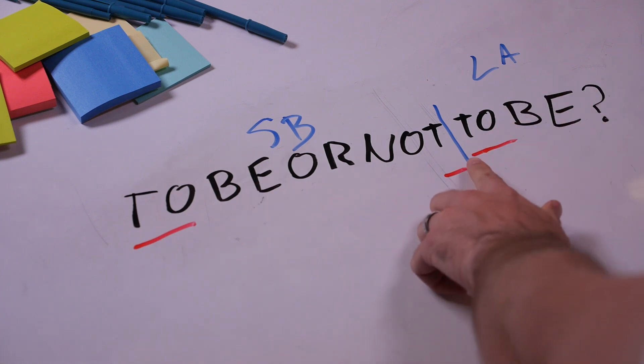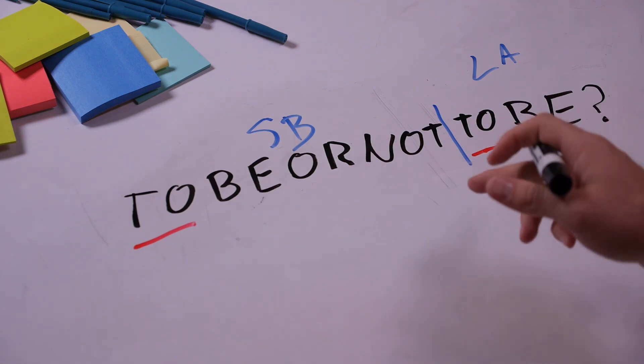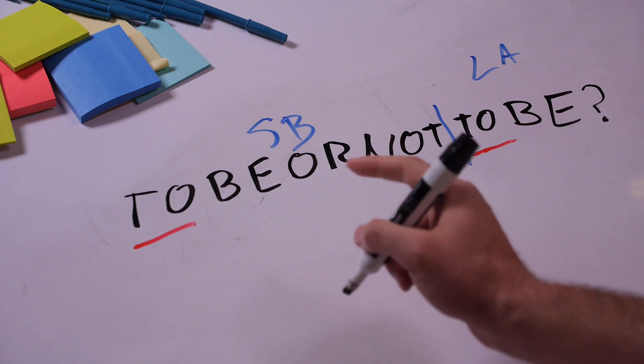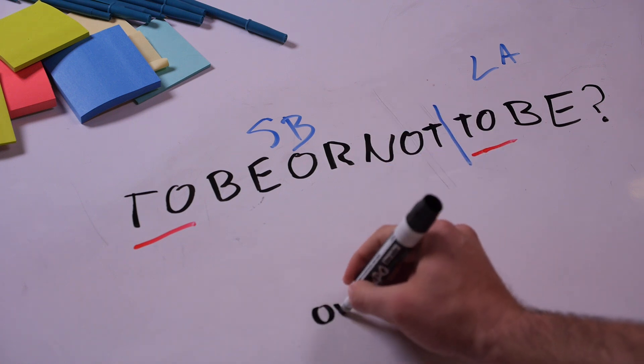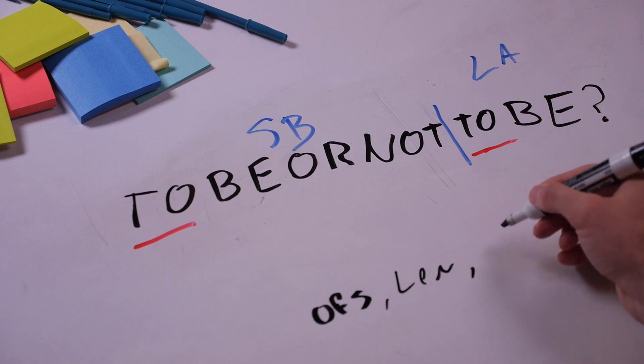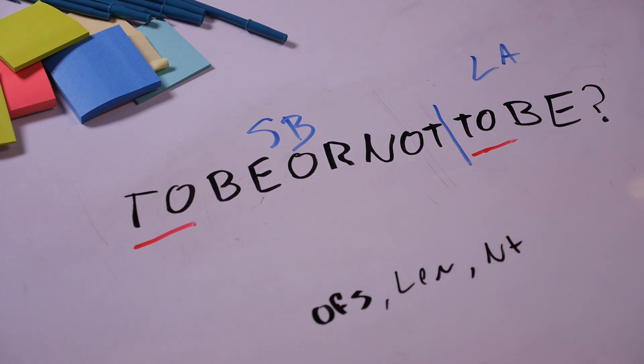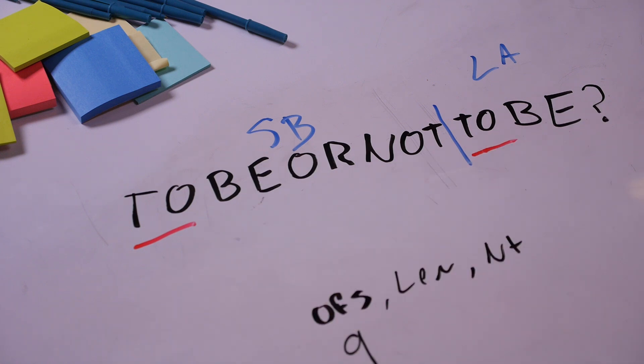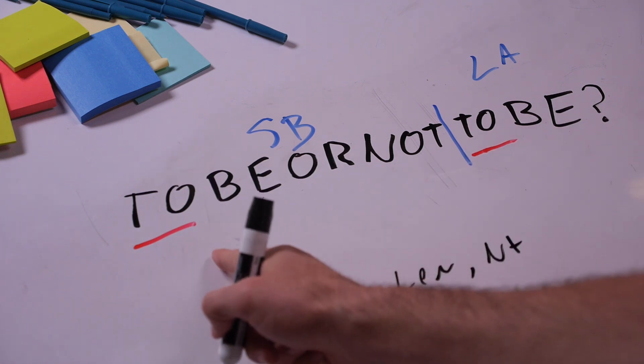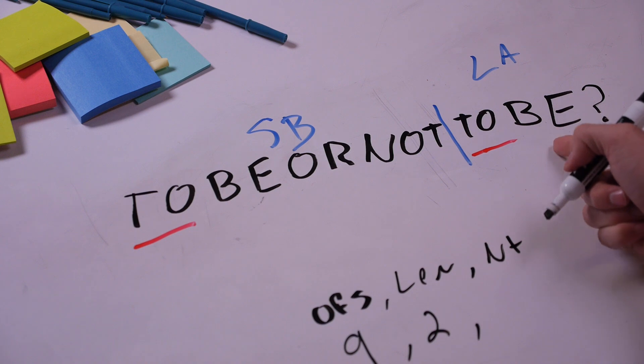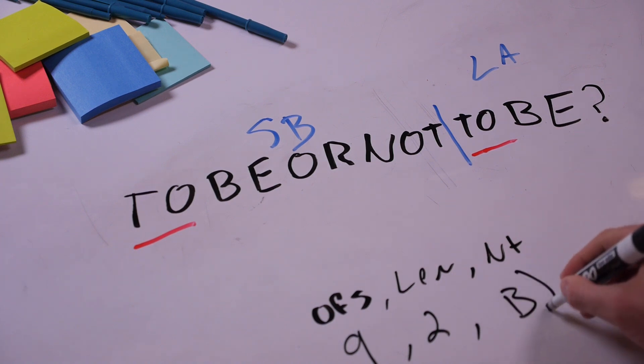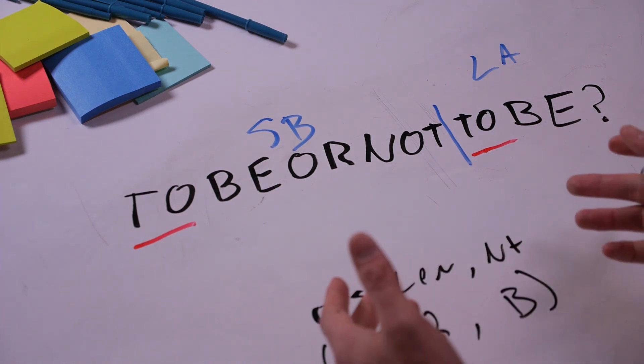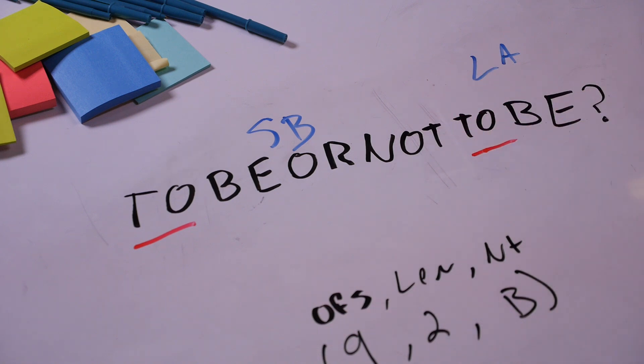If the symbol is found, then the encoder will go to read more symbols from the look ahead buffer and continue searching backwards in the search buffer until it finds the longest match. When a match is finally settled on, the encoder will output a token. The token has three parts, an offset, a length, and the next token in the stream. In this case, it would be nine backwards from the window with a length of two symbols, where the next symbol in the look ahead is the letter B. Once this is done, the window is then shifted to the right.